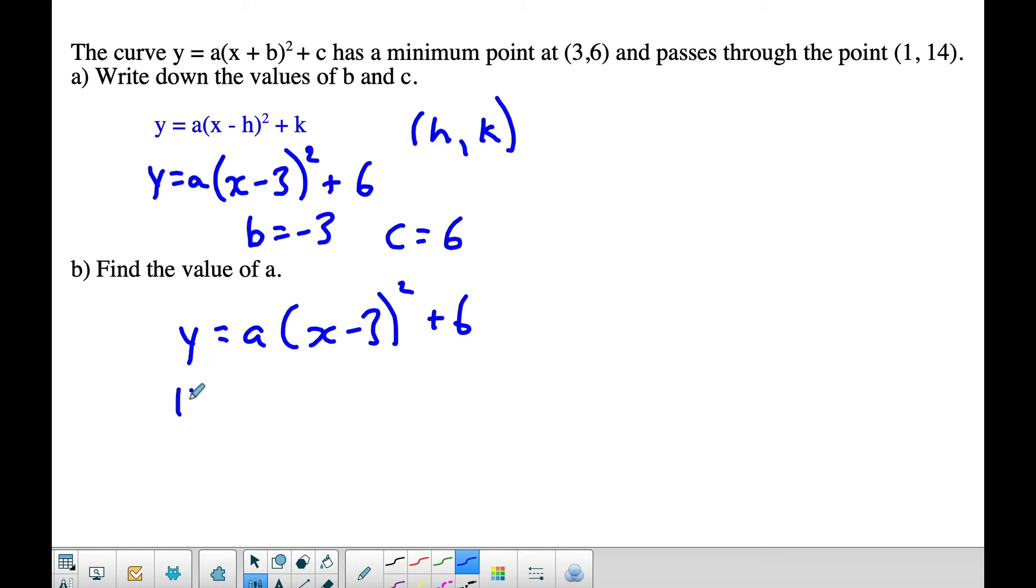So when I substitute in, 14 equals a times (1 minus 3) squared plus 6. Now, I'm going to subtract 6 from both sides. So I will end up with a times negative 2 squared, which is positive 4, equals 8.